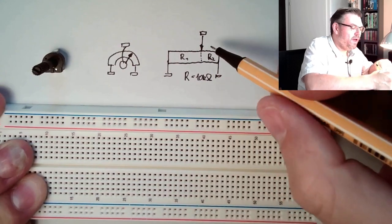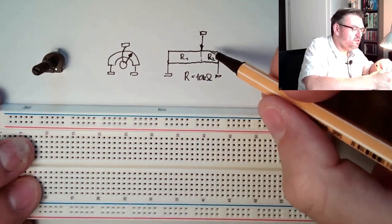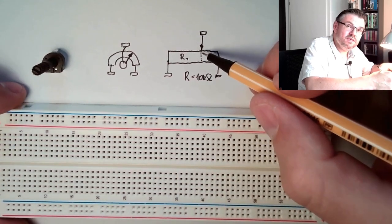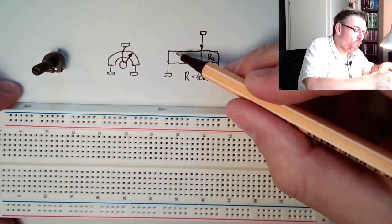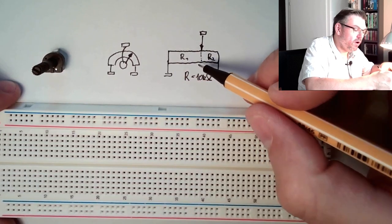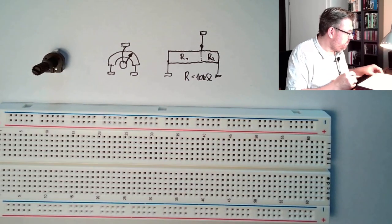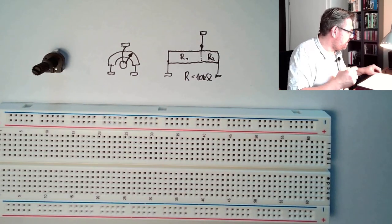And depending on at which position this slider is, this R1 is small or big. Right now it's rather big, it's bigger than R2. And what is now the big benefit of this, what is happening there?